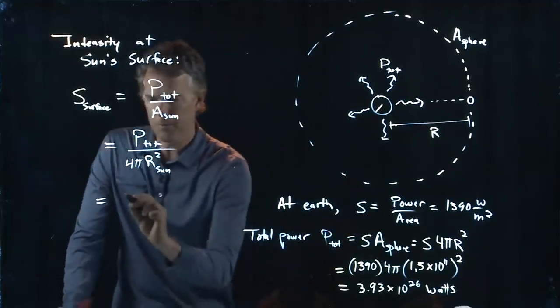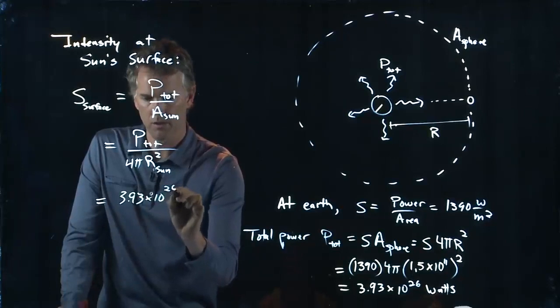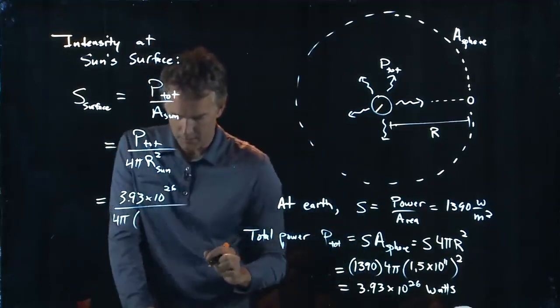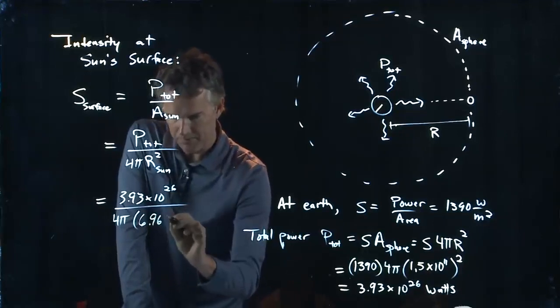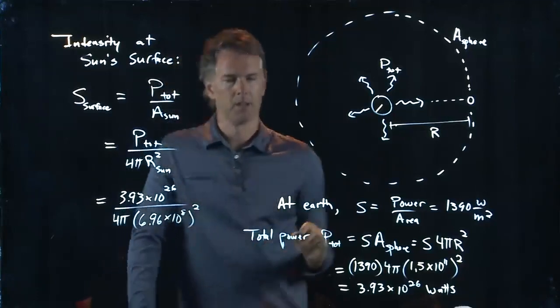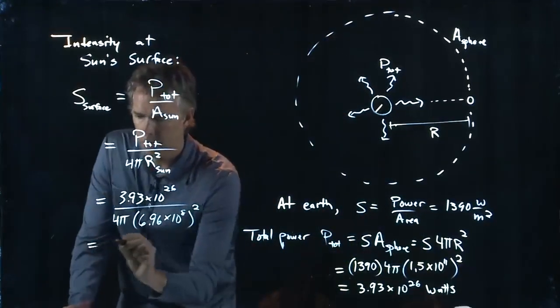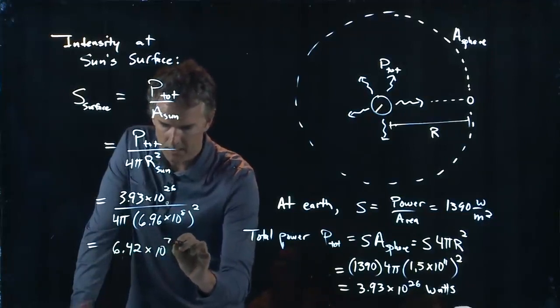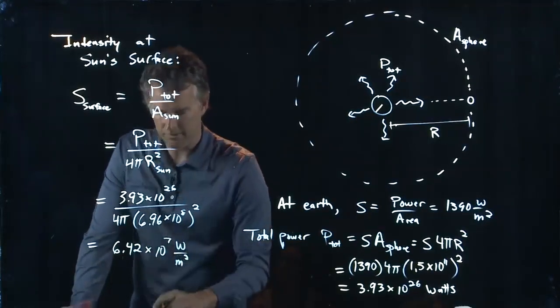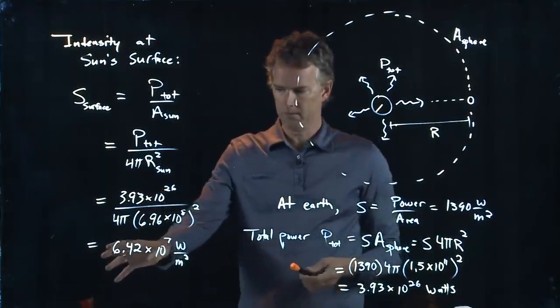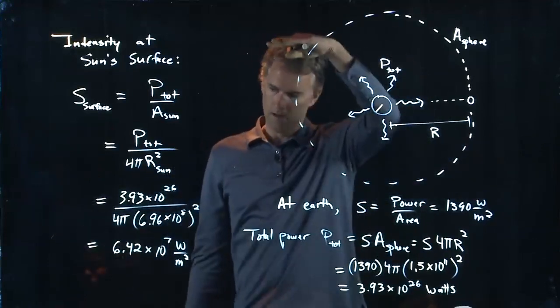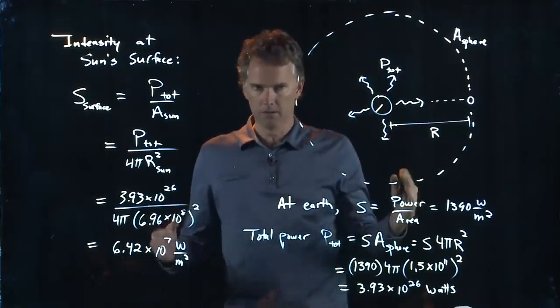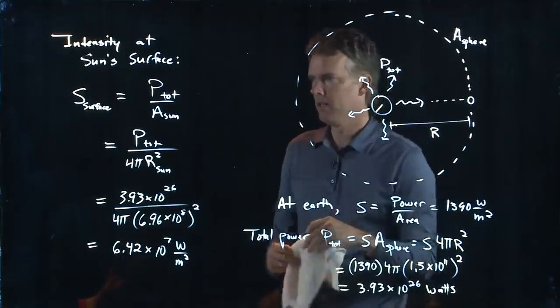So P total, we said, was 3.93 times 10 to the 26 watts. We've got a 4 pi. And then we have R squared, which if you look it up is 6.96 times 10 to the 8 meters. That's the radius of the sun. And if you put all this together, you get 6.42 times 10 to the 7 watts per square meter. Which is a big number. Think about a square meter. It's like that. And it's going to have 64 million watts in that square meter. That is a lot of electromagnetic intensity.